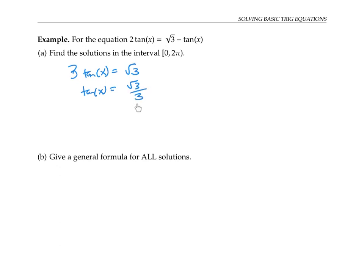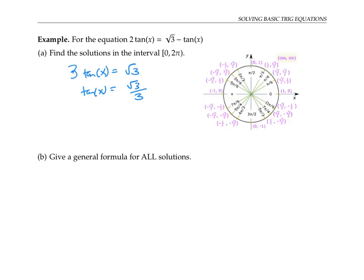The square root of three over three looks suspiciously similar to the value square root of three over two, which is a special value on my unit circle, so my suspicion is that my unit circle will again help me find this value of x without a calculator. Recall that tan x is sine x over cosine x, so I'm looking for angles on the unit circle between zero and two pi where the ratio of sine over cosine gives me square root of three over three. I only need to look in the first quadrant and the third quadrant, because those are the quadrants where tangent is positive.